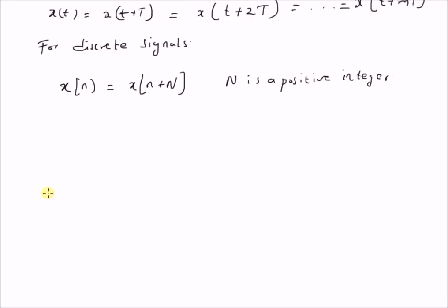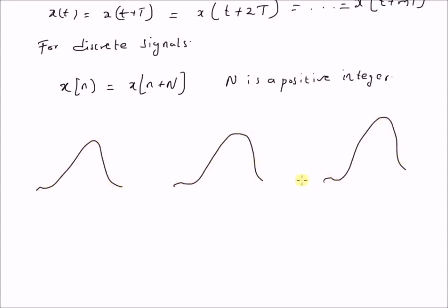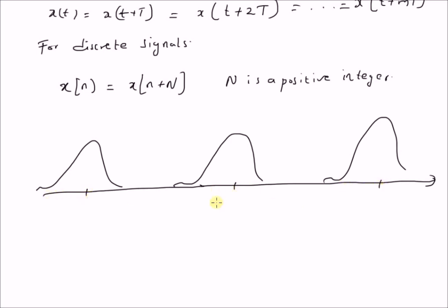Let us look at a graphical representation of the periodic signal. Basically, it is the same structure that repeats at regular intervals. So if the center is at 0, this should be equal to minus T and this should be equal to plus T.